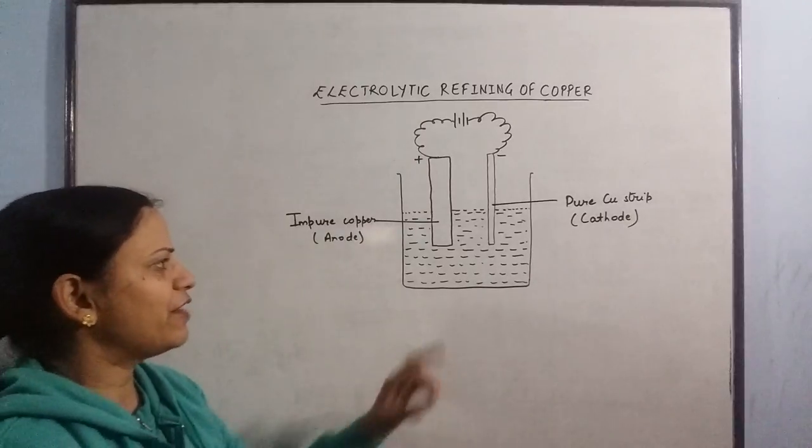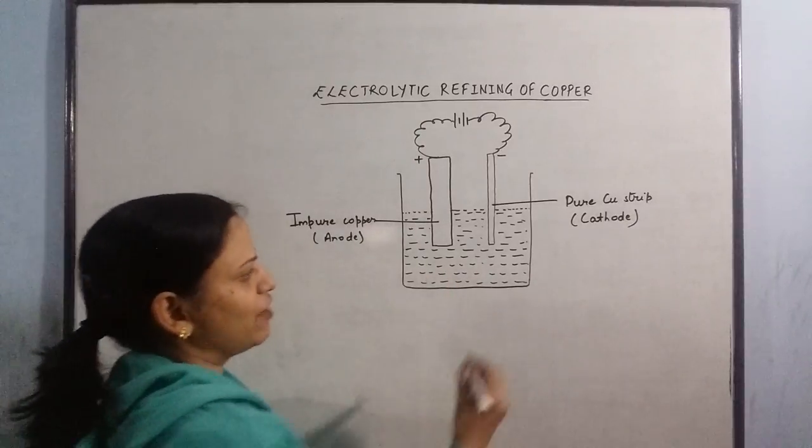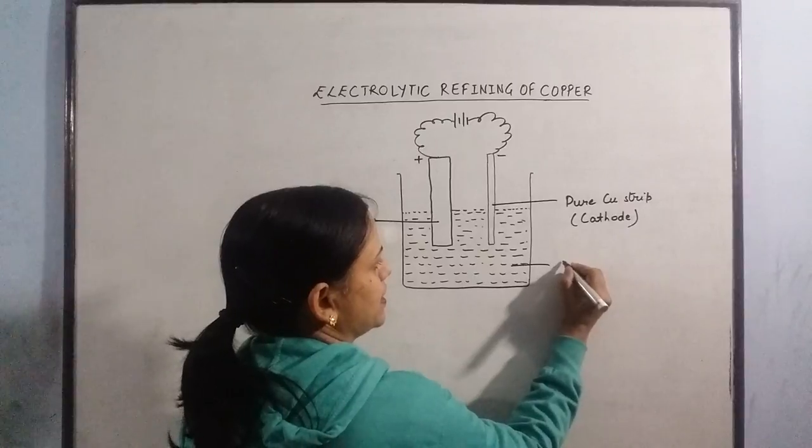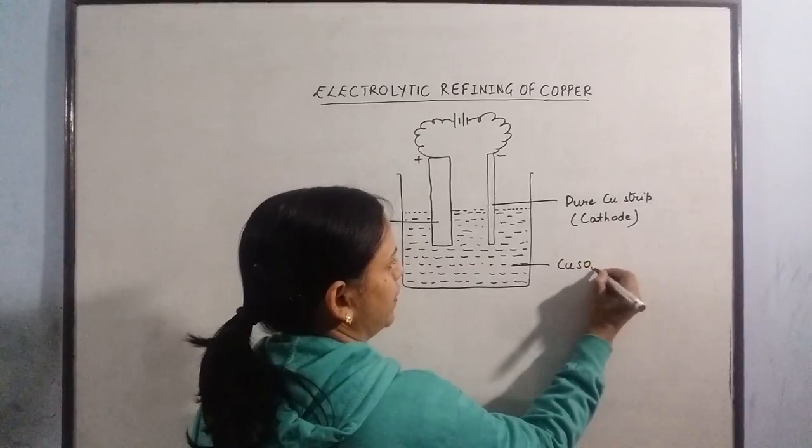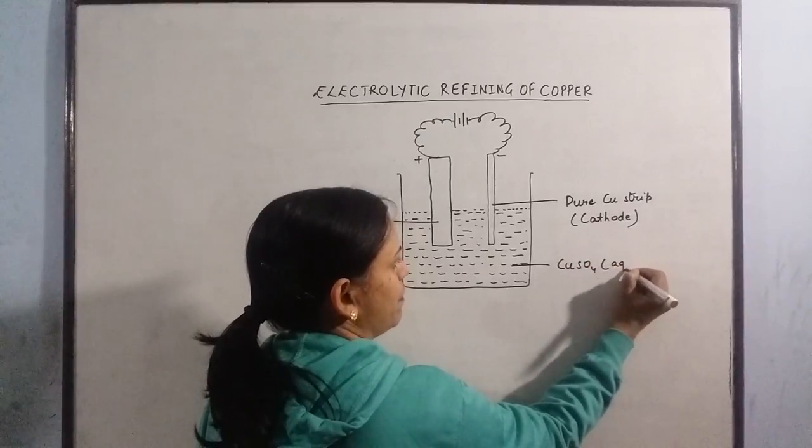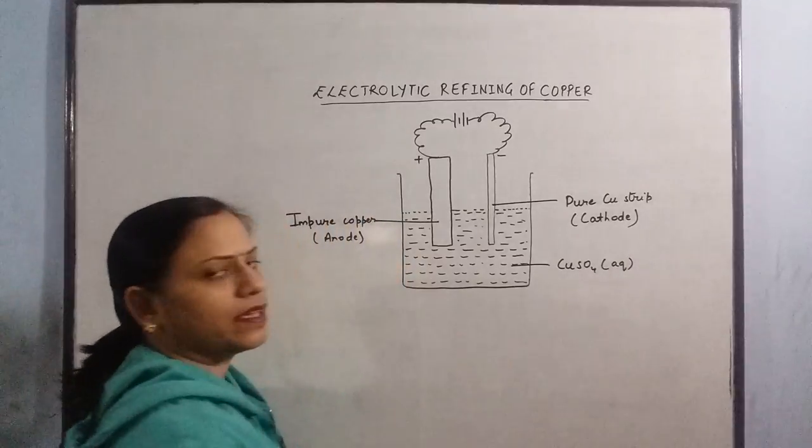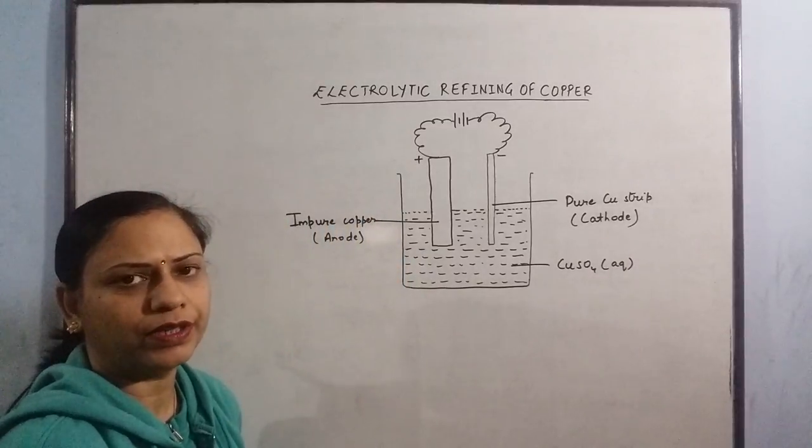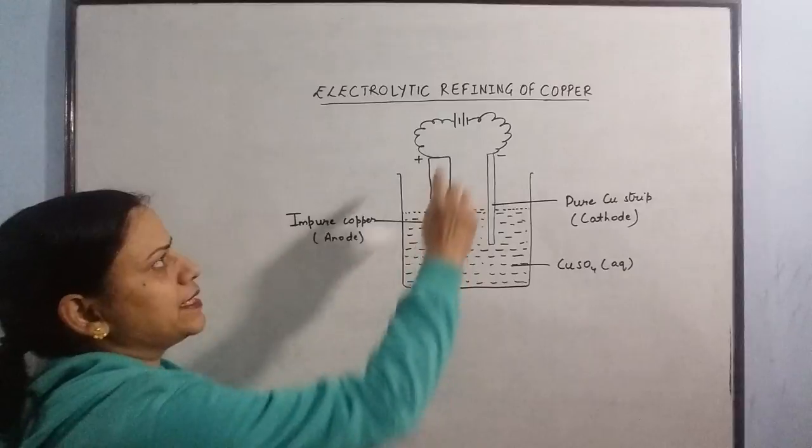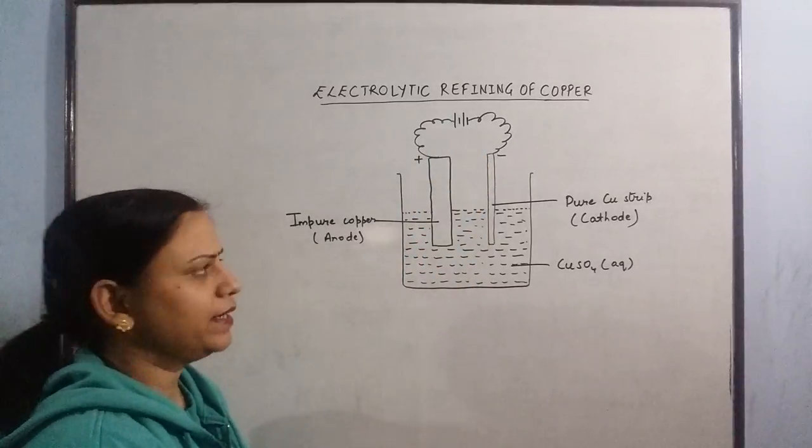The solution that we have taken in this cell is of copper sulphate. This is copper sulphate solution. In bracket, we will be mentioning aqueous because it is a solution of copper sulphate in water. This is a battery through which the current will flow through the circuit.